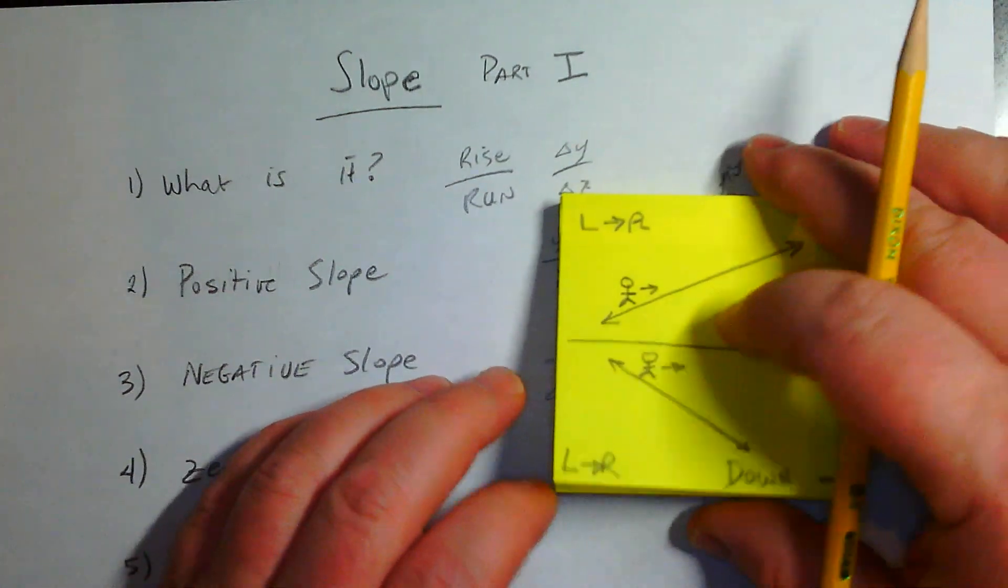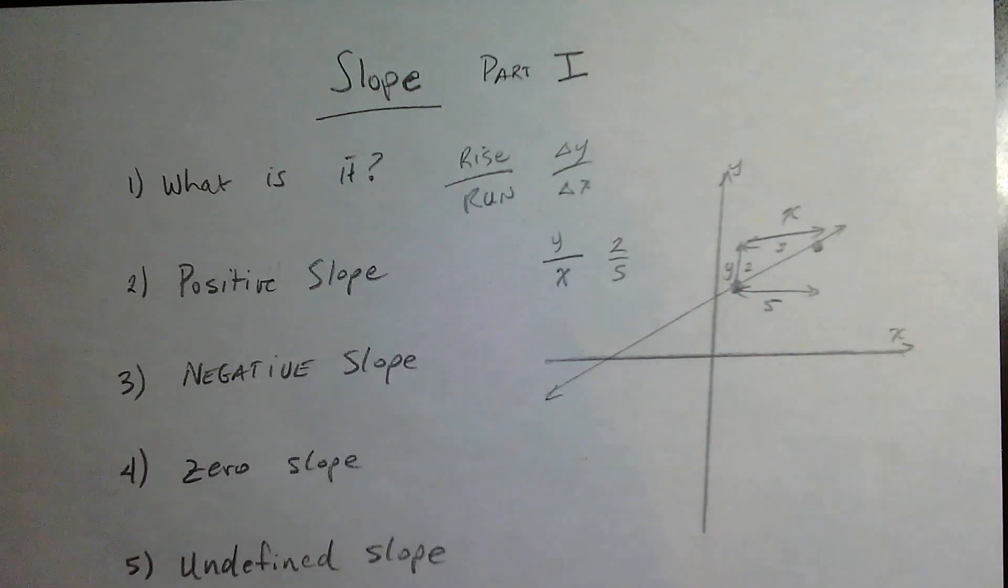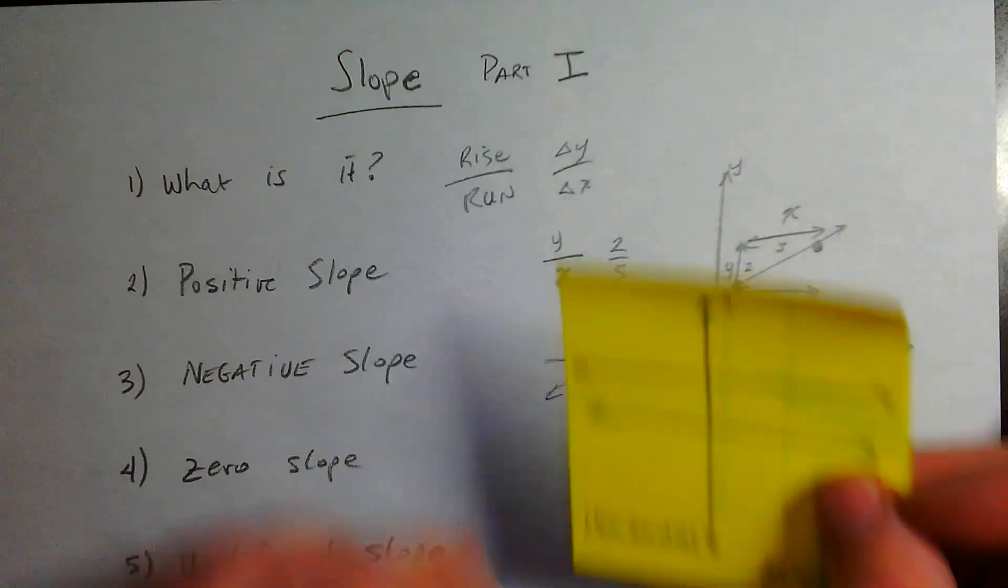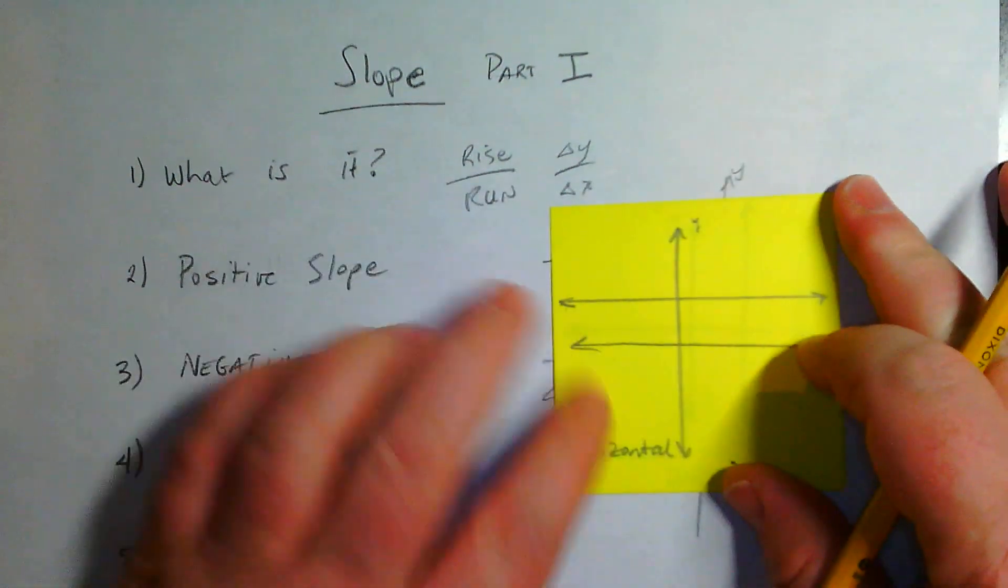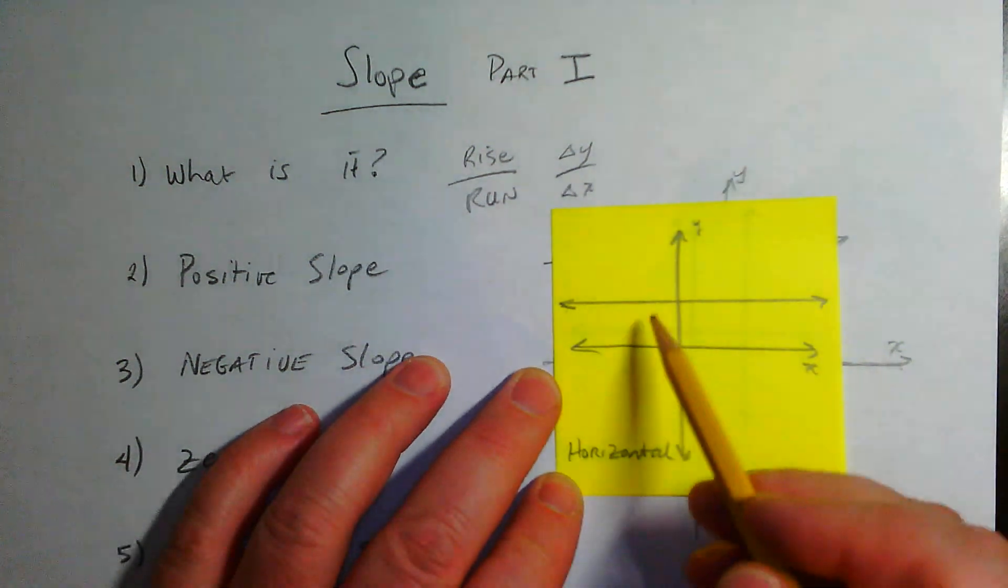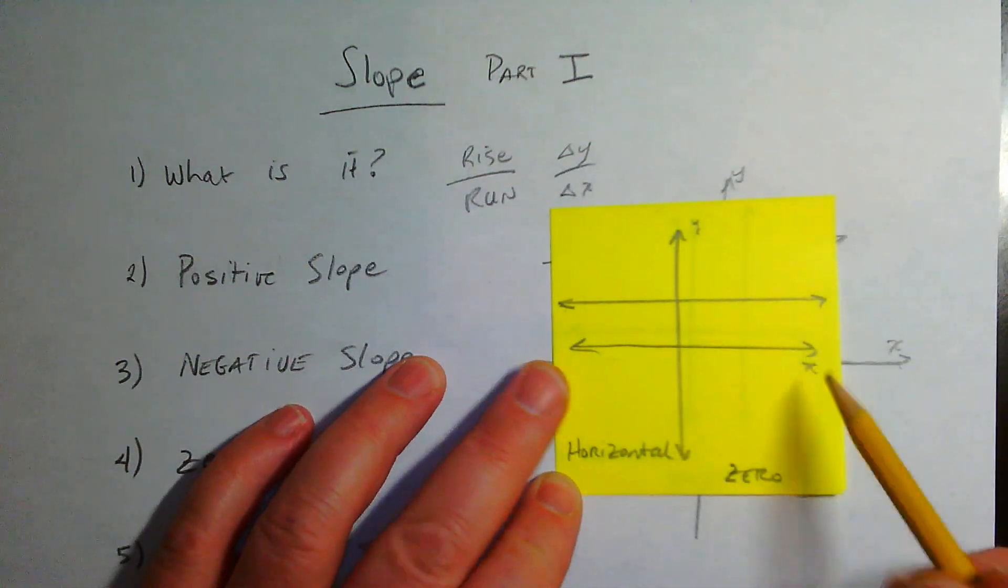Now let's talk about what a zero slope looks like. A zero slope would be a horizontal line like this right here. We have our y-axis, we have our x-axis. If you have a line that's horizontal like the horizon, then that slope is zero.